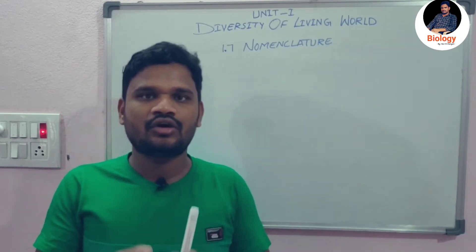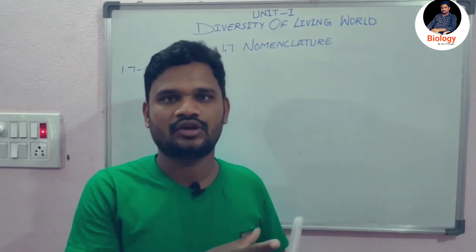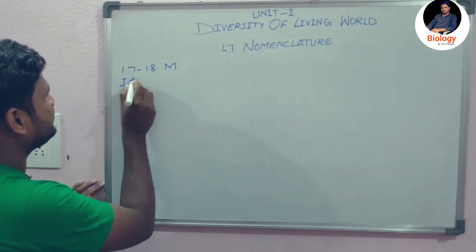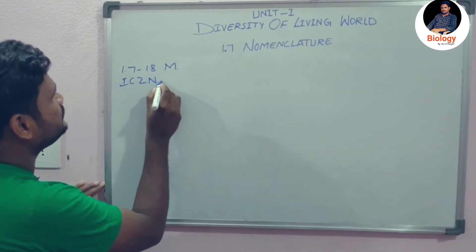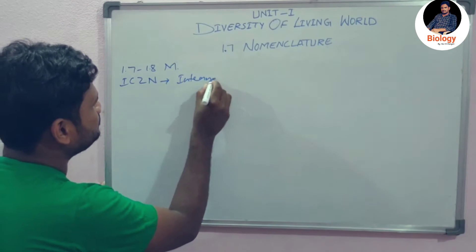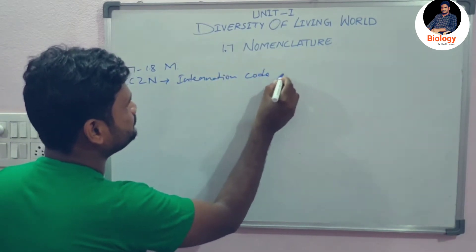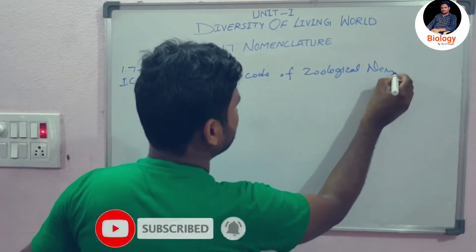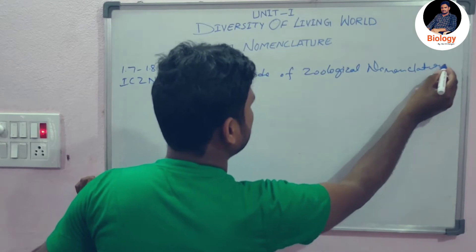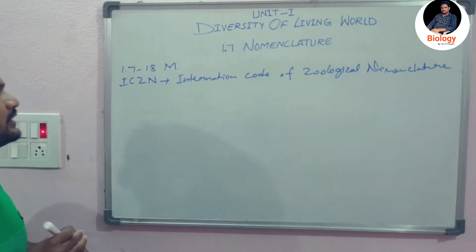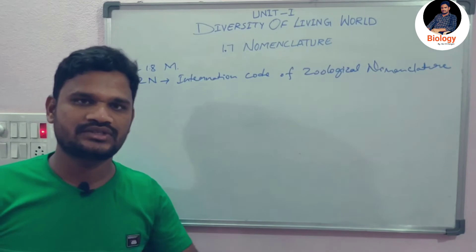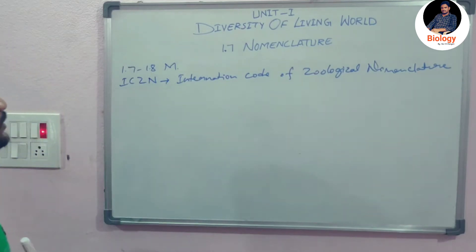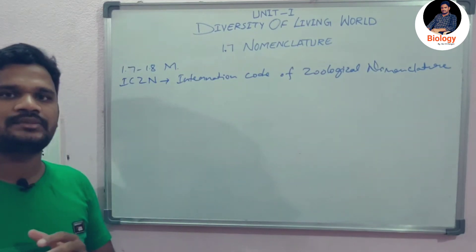Nomenclature means the naming of an organism. This nomenclature is done based on the rules and regulations of the ICZN — that is, the International Code of Zoological Nomenclature. This institution gives rules and regulations for how we have to put a name to a particular organism.